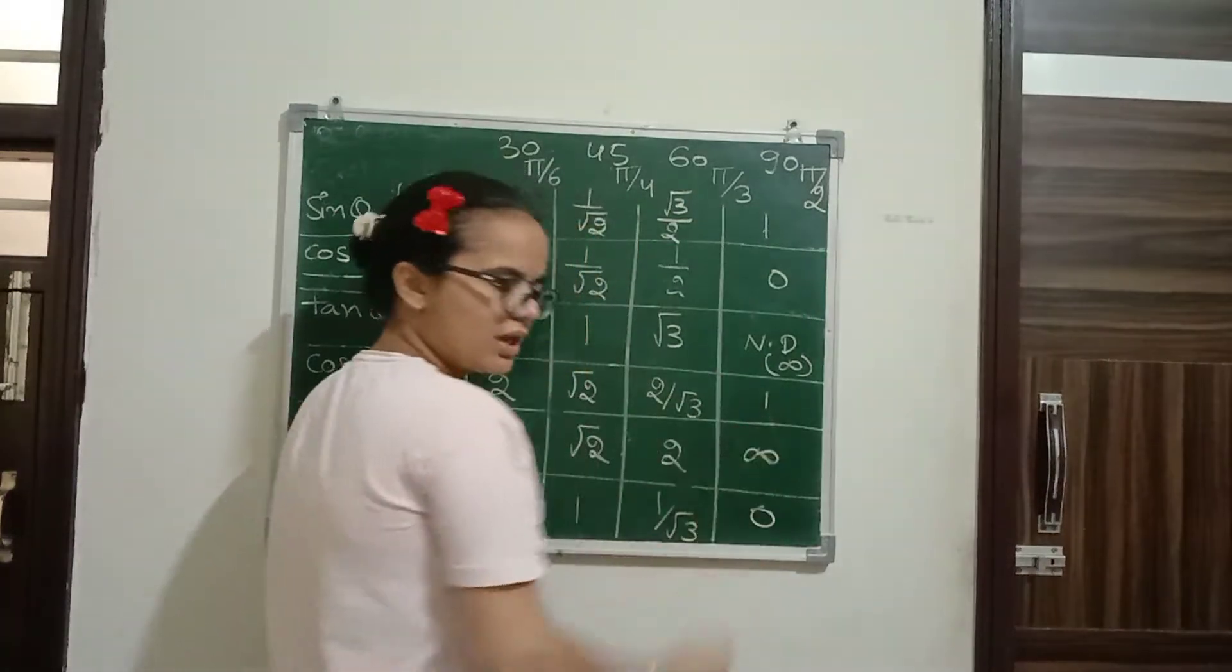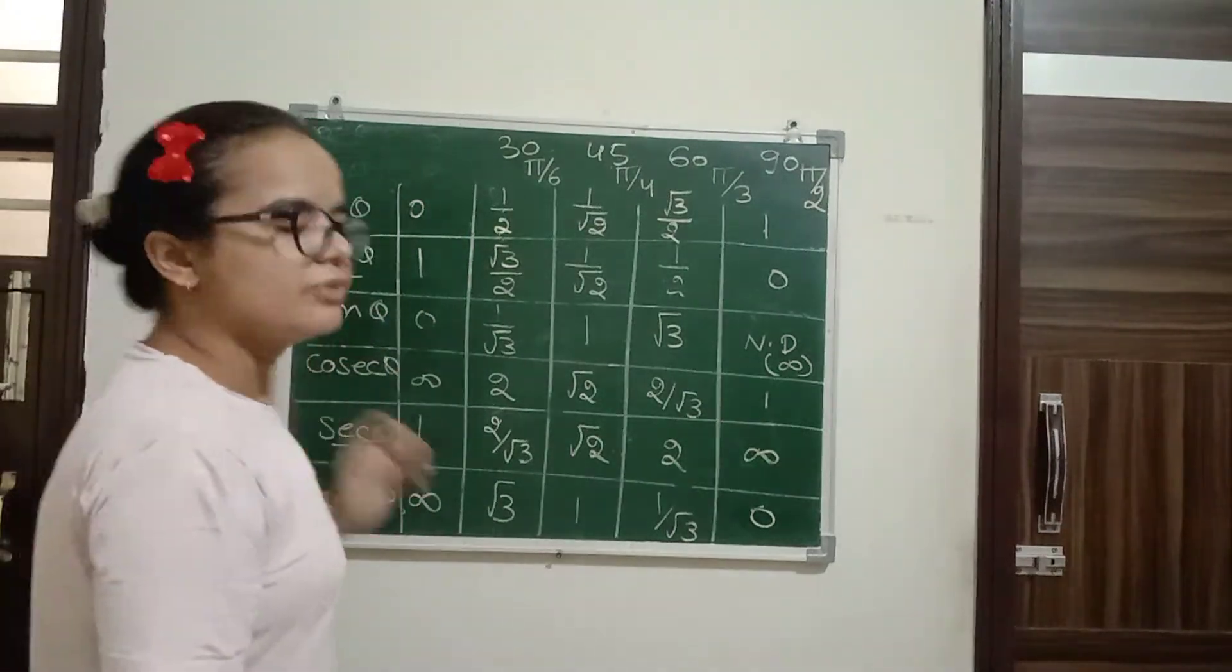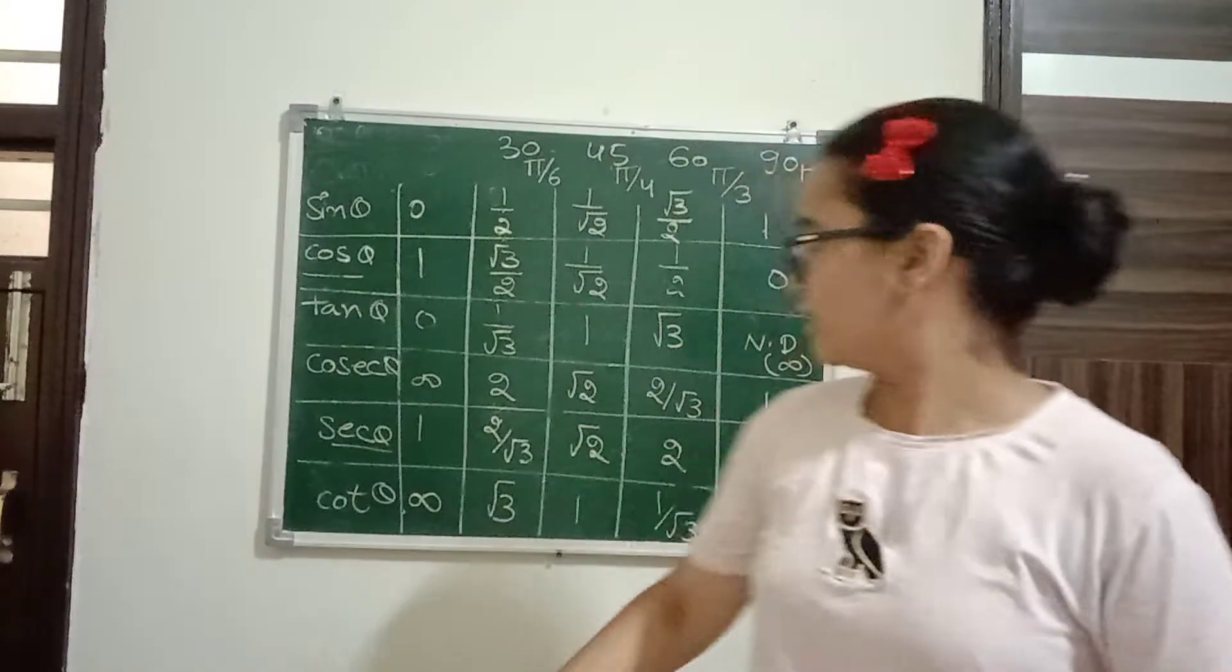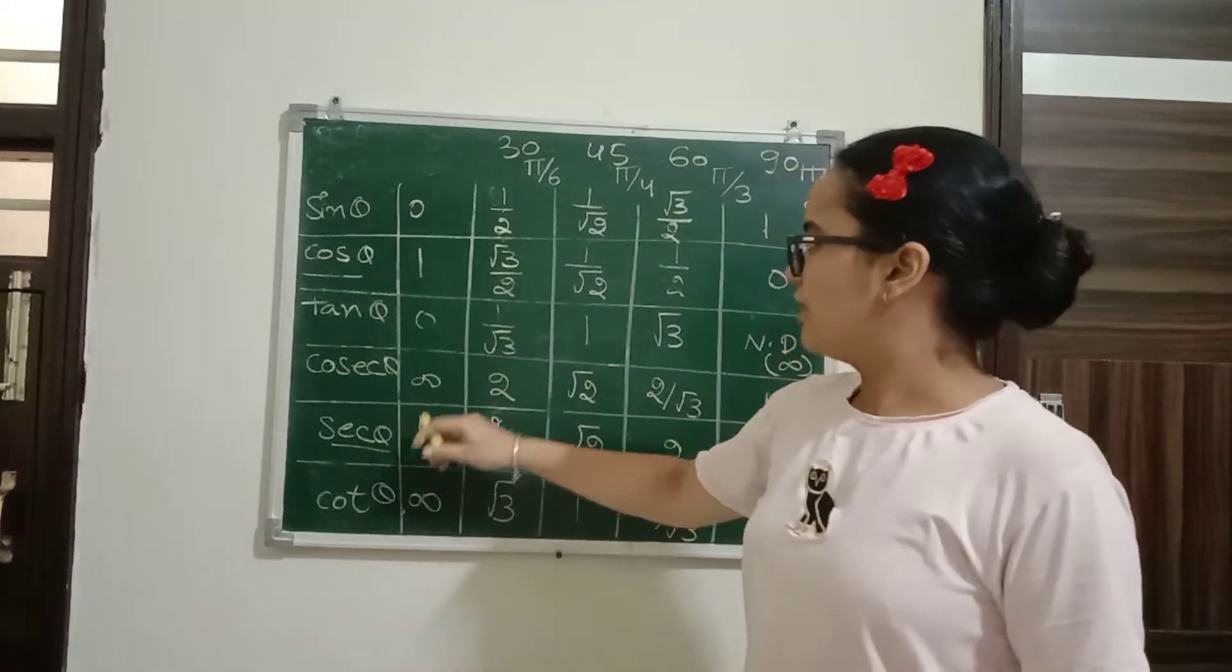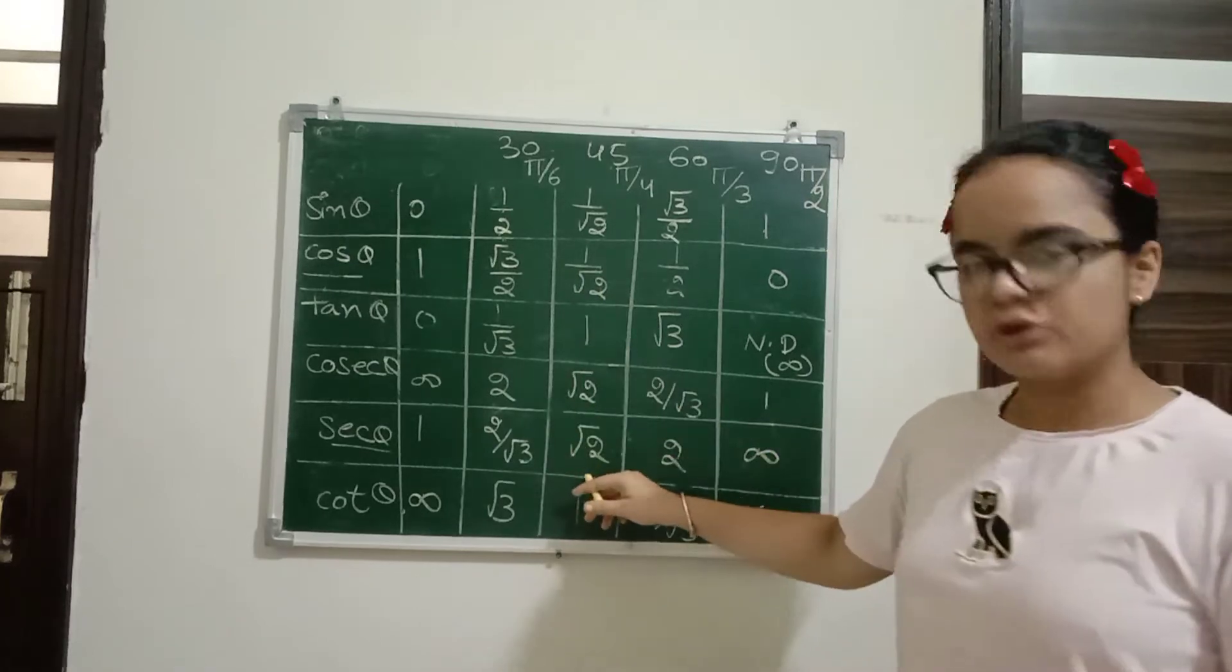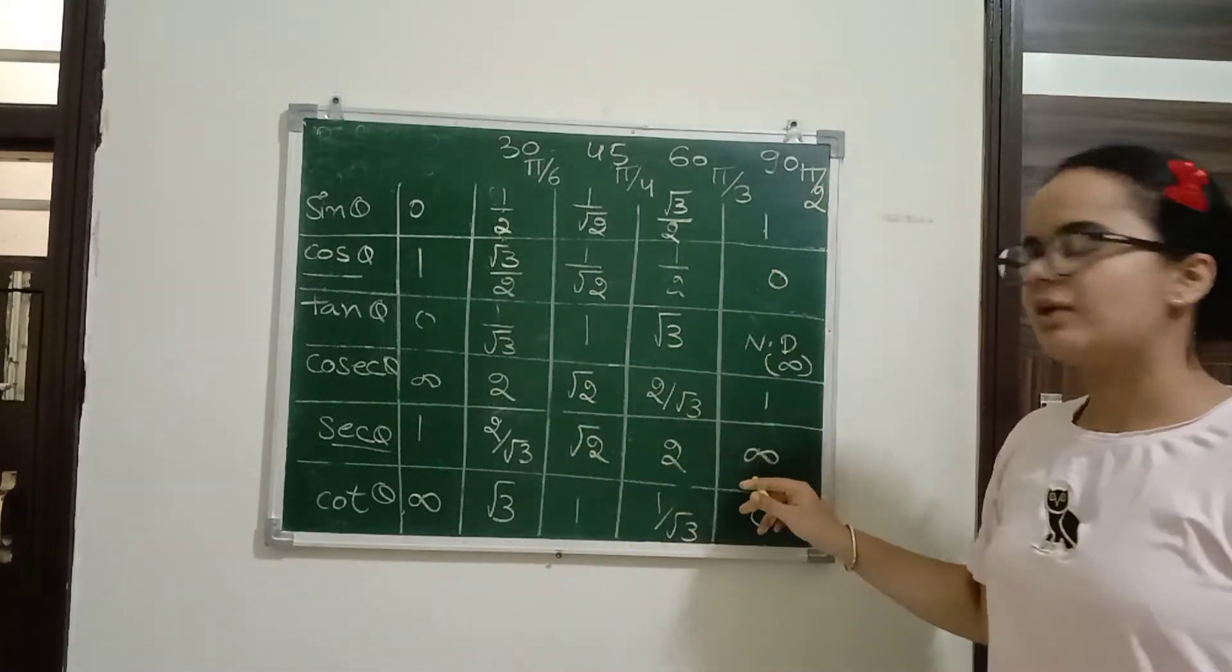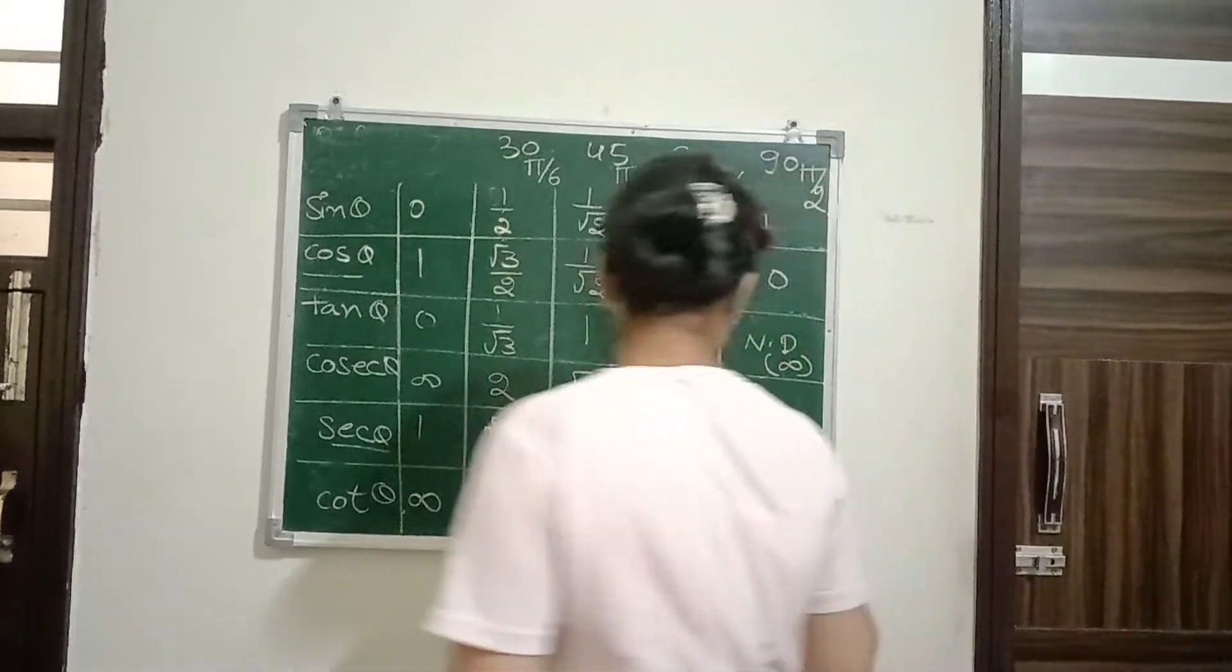Secant theta is the reciprocal of cos theta. One by reciprocal is one, root three by two is two by root three, one by root two is root two, one by two is two, and zero reciprocal is not defined.